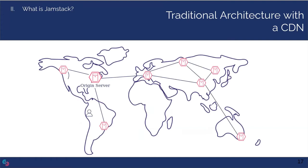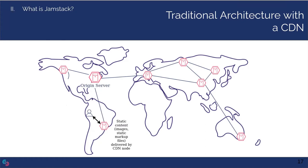A CDN, or content delivery network, is a global network of caches whose purpose is to host the static content of your website. Because this content doesn't have to be freshly generated on every request, it can be stored in CDN nodes and delivered from locations closer to the client. This means static content is delivered from nearby, reducing delivery time. However, dynamic content still has to be generated by the application server, so those long round trips are still necessary. As traffic increases, an application server may also be slower to respond.